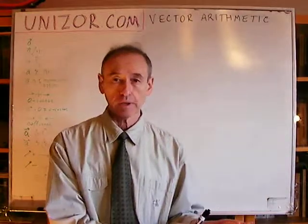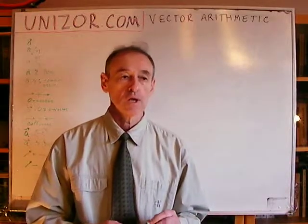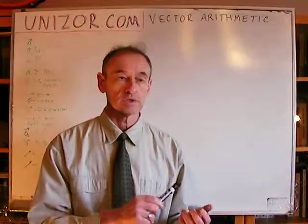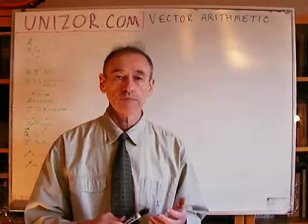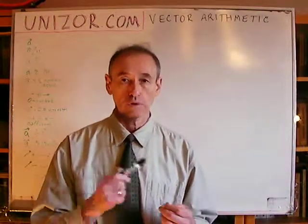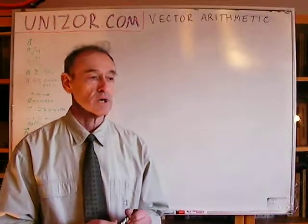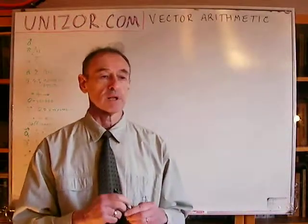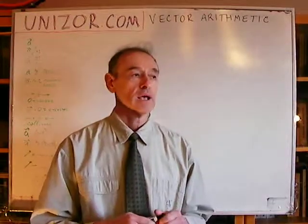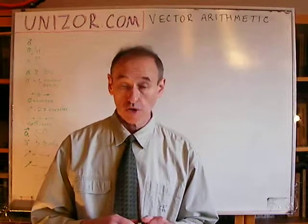Multiplication of vector by vector is a separate topic. There are two kinds: one is called scalar or dot product, and another is called vector or cross product, and those would be separate topics. So today, this lecture is about multiplication and division by real numbers and addition and subtraction of vectors.